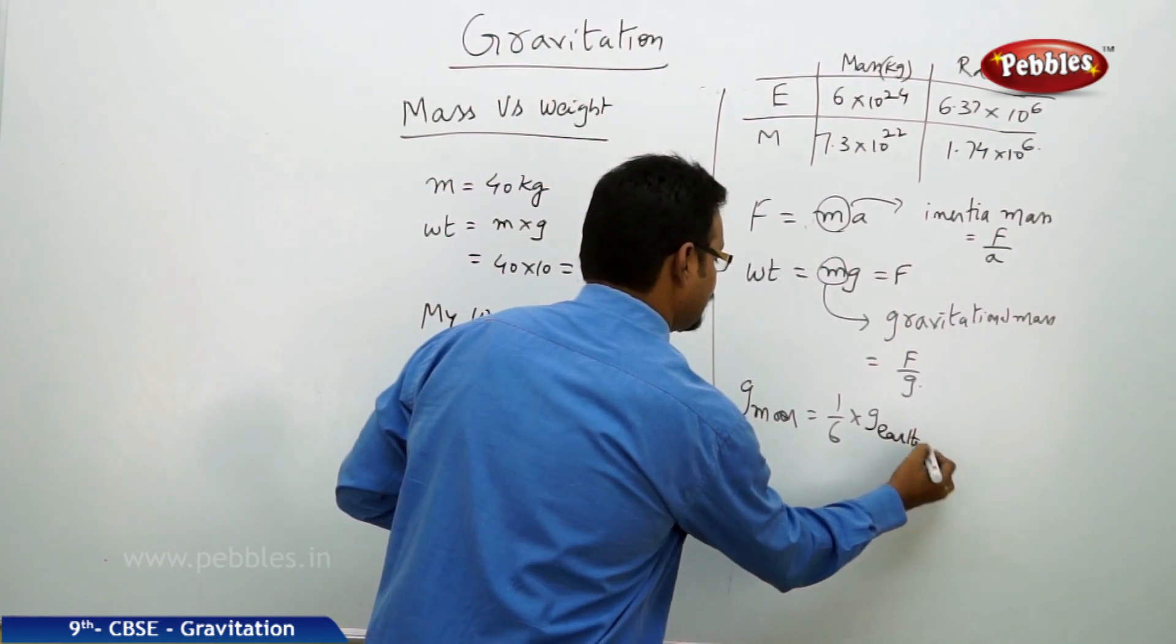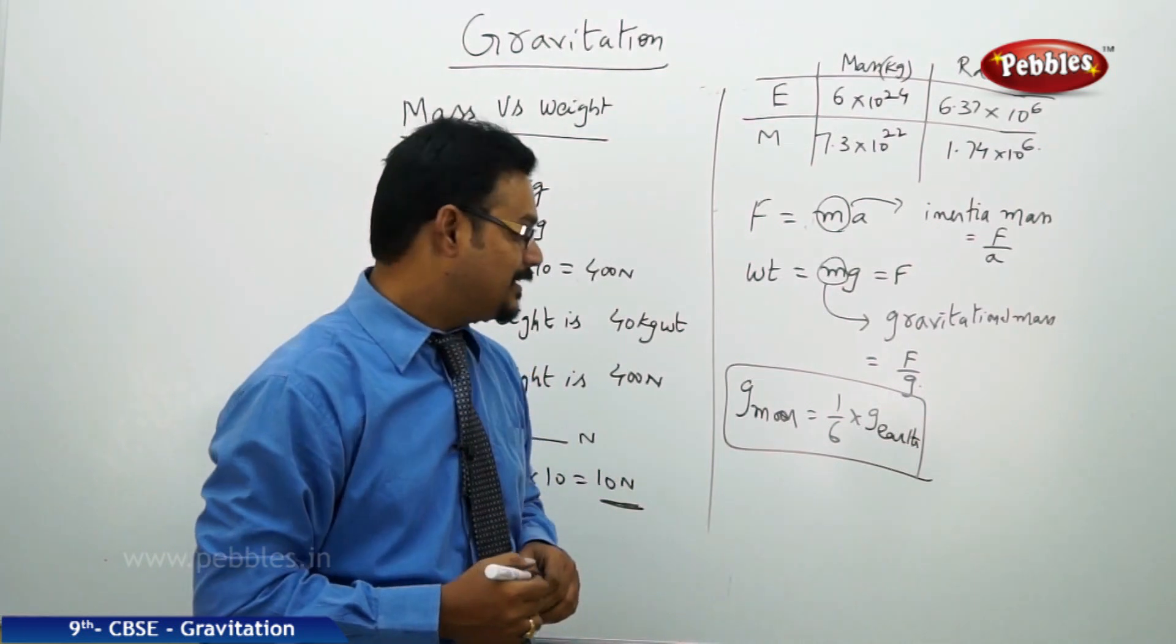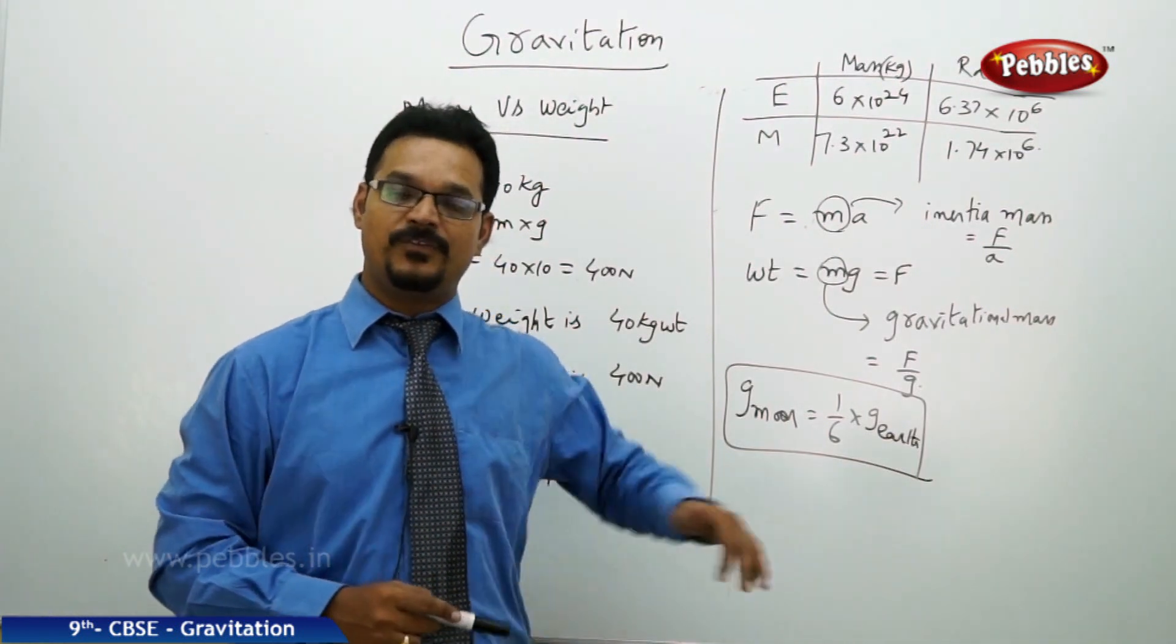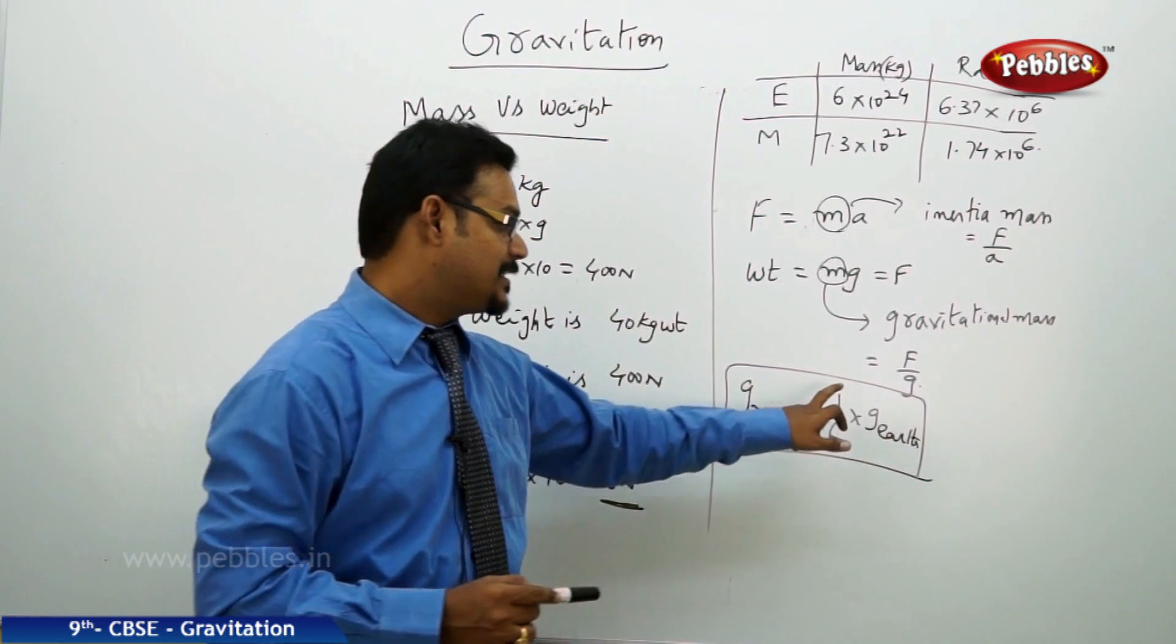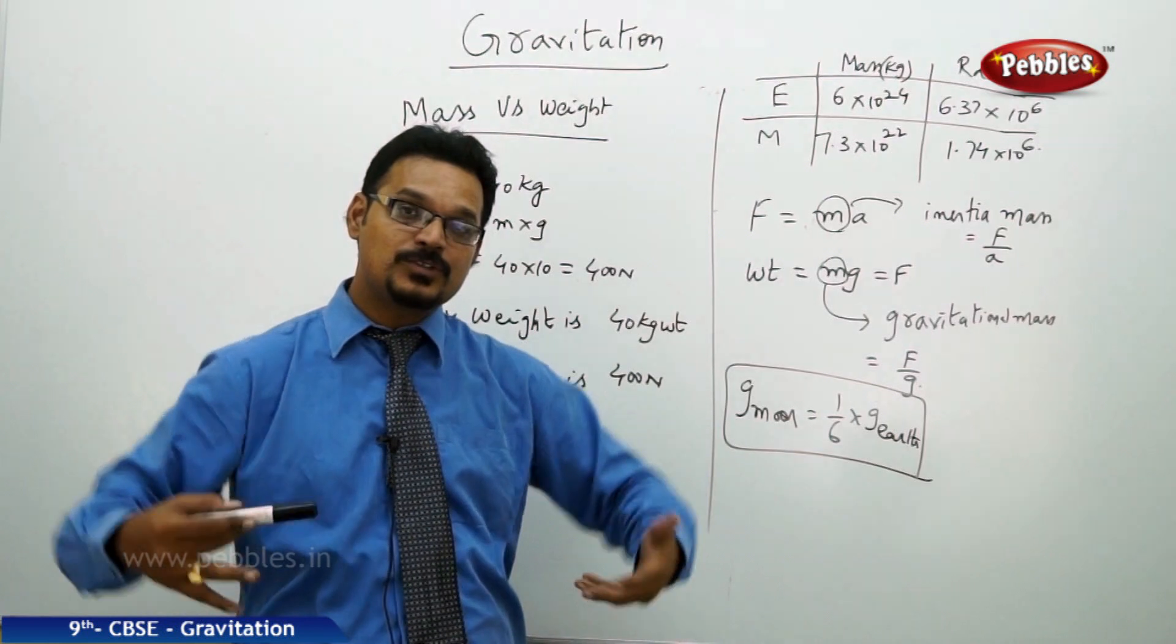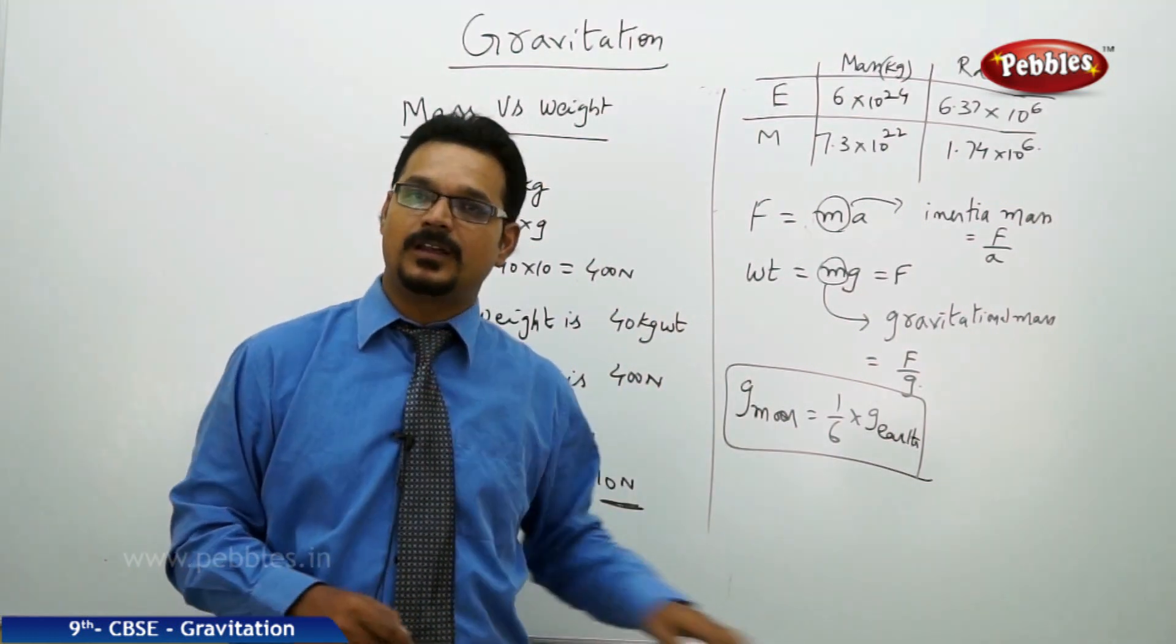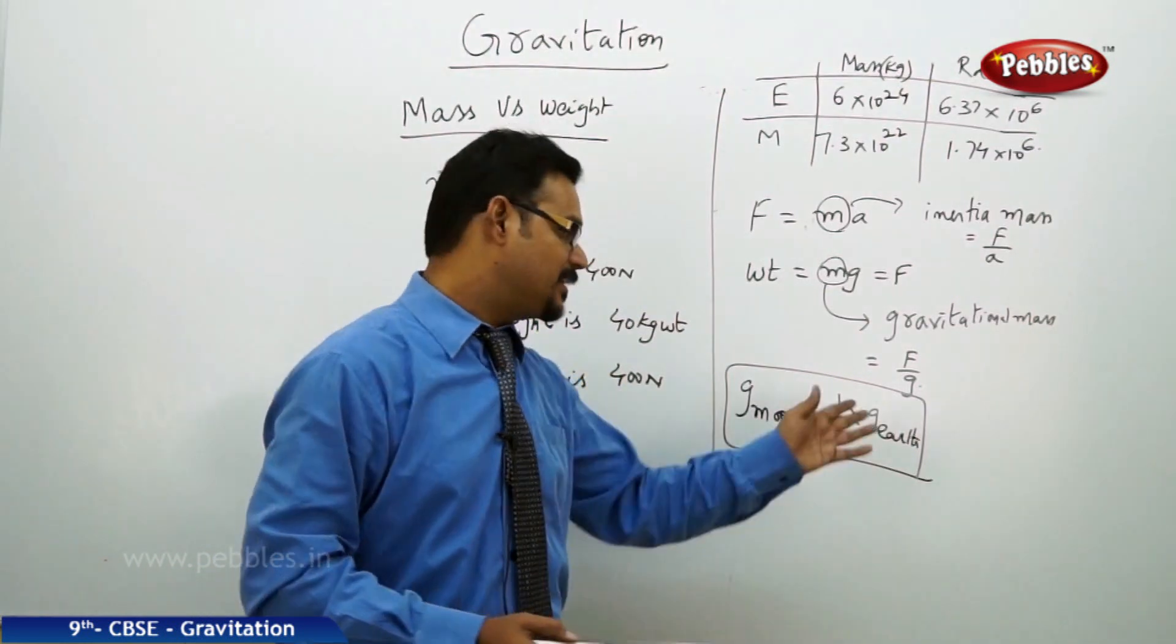That means what? Suppose your weight is 60 kg here, but if you are on the moon, then you are not 60 kg—60 by 6, you feel only 10 kg. Means you lost your weight. Suppose your weight is 30 kg on the Earth. If you go to the moon, it is only just 5 kg because 30 by 6.